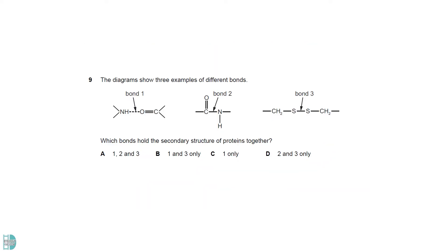The secondary structure of proteins is held by hydrogen bonds between the oxygen of the CO group of one amino acid and the hydrogen of the NH group of another. It is shown in one. Bond 2 is the peptide bond, it holds the primary structure. Bond 3 is the disulfide bridge, it is one of the bonds for the tertiary structure.